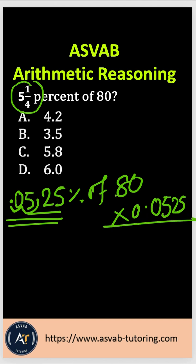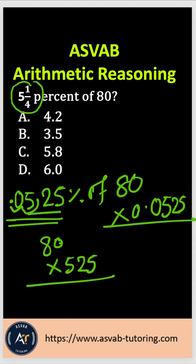Anytime you want to multiply decimals, forget about the decimals first and multiply without them. So that gives you 80 times 525. Multiply the regular way — put a 0 here, then multiply 8 with everything. 8 times 5 is 40, carry 4. 8 times 2 is 16, plus 4 is 20, carry 2. 8 times 5 is 40, plus 2 is 42.